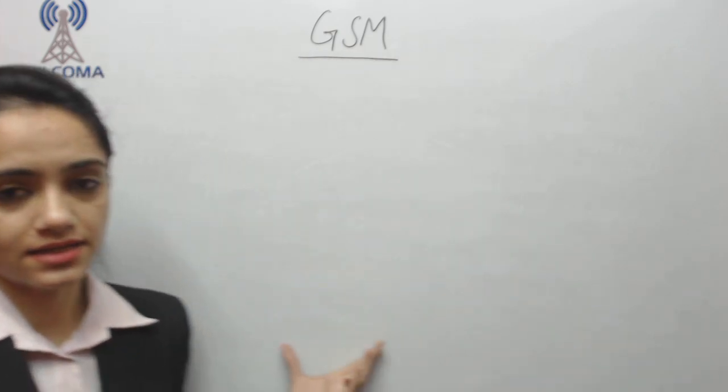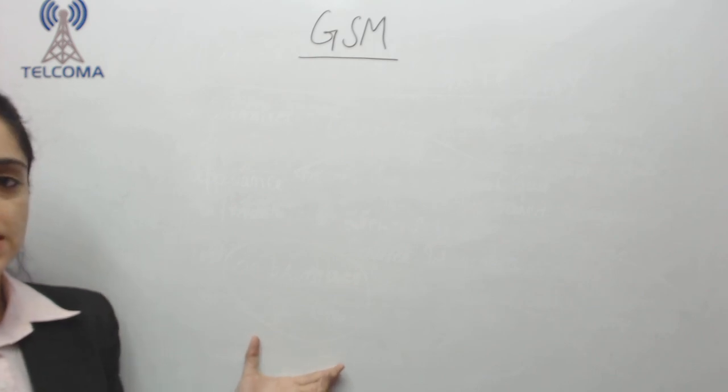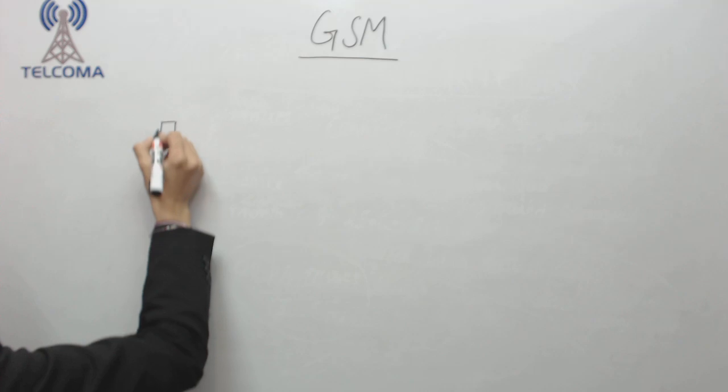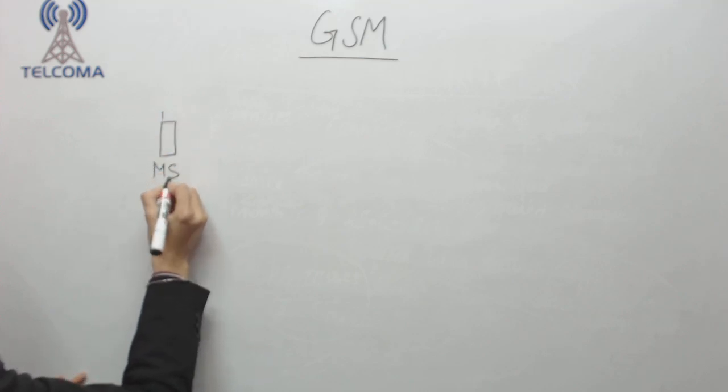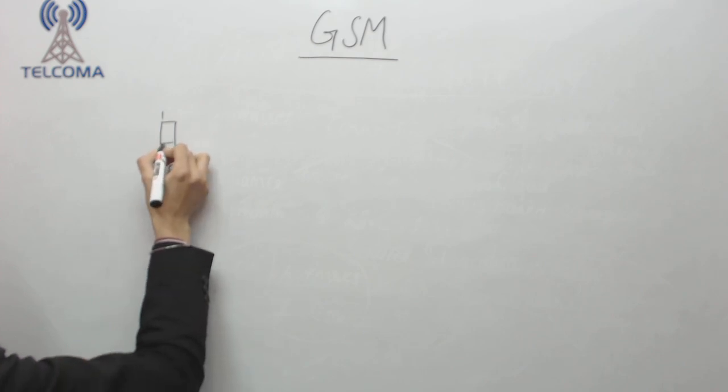In our previous class, we discussed the basic architecture of the GSM network. Today we are going to discuss the network in more detail. The very first entity in network architecture is the mobile station.